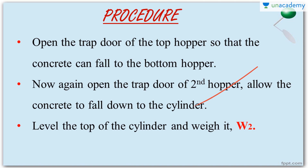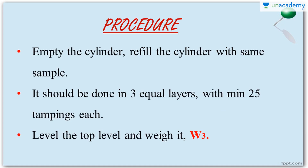Open the trap door of the second hopper and allow the concrete to free-fall into the bottom cylinder. Now the concrete fills the cylinder — level the top surface of the cylinder. Weigh this setup: that is the weight of the cylinder plus the weight of partially compacted concrete. Let that be W2.